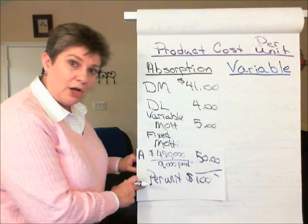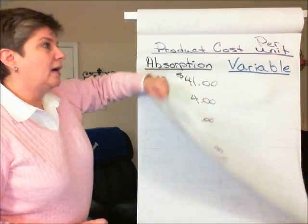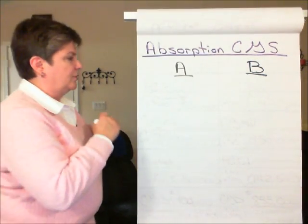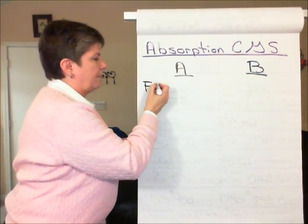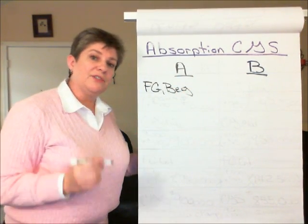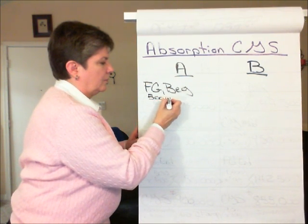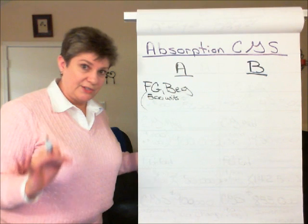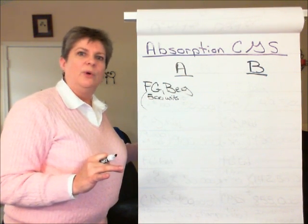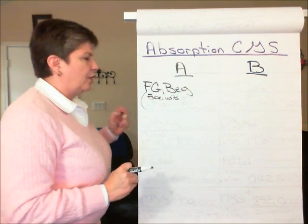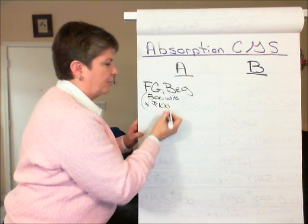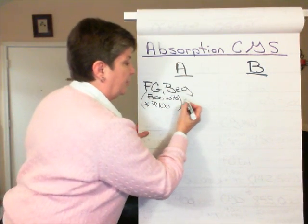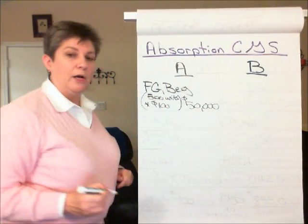We've got our full product cost per unit under absorption of $100. Now let's look at how we calculate cost of goods sold under Scenario A. Our starting point is beginning finished goods inventory. Recall that in Scenario A, there were 500 units in finished goods inventory. For simplicity, let's assume last period's production and cost were the same as this period's, so those 500 units would be costed at the same $100 per unit. Beginning inventory: 500 units times $100 per unit equals $50,000.